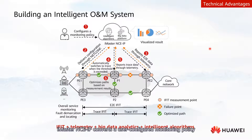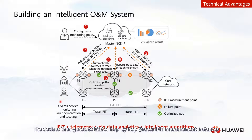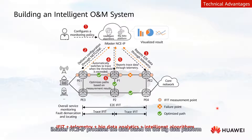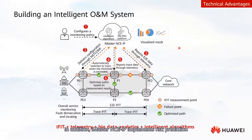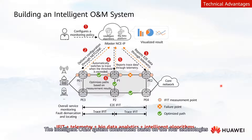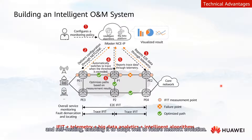Specifically, iMaster NCE-IP converts a user-configured monitoring policy into device commands that it delivers to devices. The devices then generate E2E or hop-by-hop iFIT measurement instances and report collected data through telemetry. iMaster NCE-IP processes the data based on the big data platform and displays the results on its GUI. In addition, iMaster NCE-IP implements risk prediction and path optimization based on intelligent algorithms. The intelligent O&M system constructed on these four technologies can implement proactive anomaly detection, fast fault demarcation and locating, and self-healing, enabling it to adapt well to future network evolution.